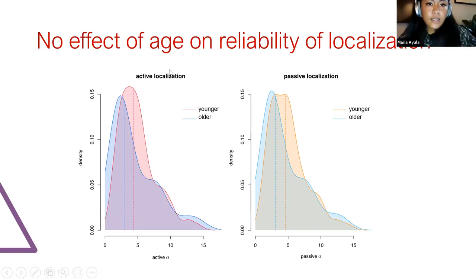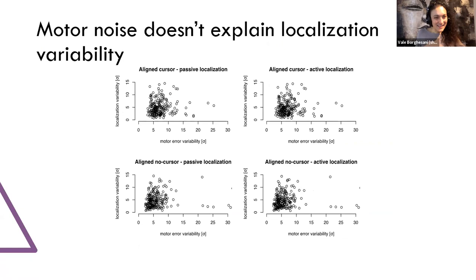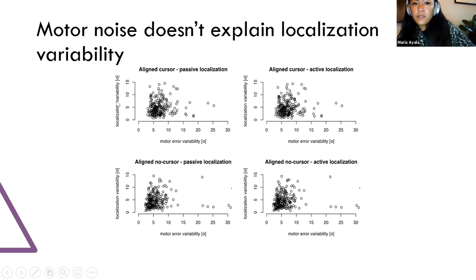Okay. So I've got a slide for this, just in case. Right. So here you'll see on the X is motor error variability, so just variability of baseline reaches. And on the Y, you'll see localization variability. And we don't see a relationship for either passive localization or the active localization condition. So motor noise doesn't seem to explain localization variability.